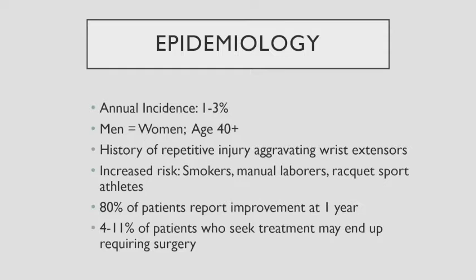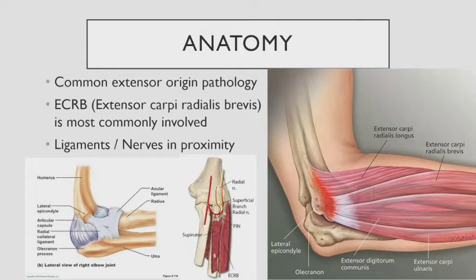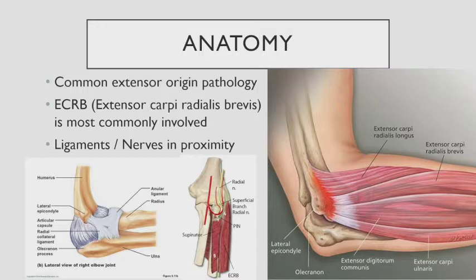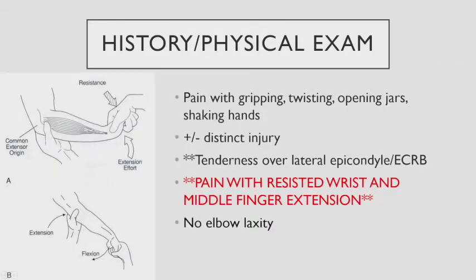On the lateral side of the elbow are the common extensors — the muscles that extend your wrist. The extensor carpi radialis brevis is the most commonly involved muscle. These tendons and muscles can tear, become inflamed, or get degenerative. But there are also a lot of other things in the area that can cause lateral elbow pain, so we'll talk about the warning signs.